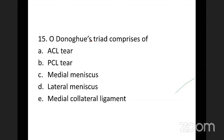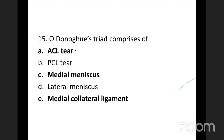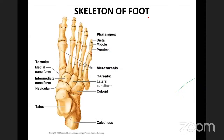There is a triad called the O'Donoghue Triad, or unhappy triad, seen commonly in footballers. When the foot is planted on the ground and the player suffers a lateral injury causing hyperabduction, three structures are torn: the anterior cruciate ligament, medial meniscus, and medial collateral ligament.